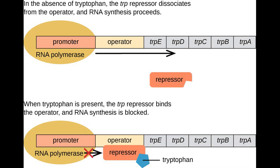Just like with prokaryotes, transcription in eukaryotes is regulated by proteins that bind to DNA that can either facilitate or inhibit the binding of RNA polymerase to the transcriptional start site. Recall that the initiation of transcription in eukaryotes relies on a promoter that contains specific sequences, such as the TATA box, that are binding sites for transcription factors that recruit RNA polymerase. These sequences are also called cis-regulatory elements, since they control genes that are within close proximity.